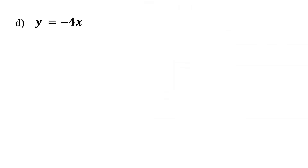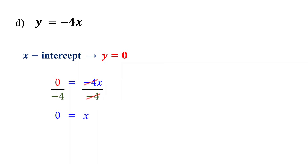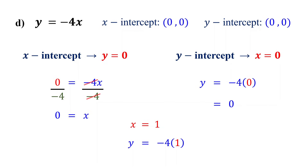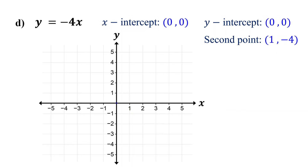The next example is a bit tricky, so stay with me. When you set y to 0 and solve for x, you find that the x-intercept is the point 0 comma 0. Similarly, when you set x to 0 and solve for y, you find that the y-intercept is also 0 comma 0. Notice that both intercepts are the same, so we only have one point. However, to graph a line, we need two points. So, let's find another point by choosing any value for x and solving for y. Let's choose x equals 1. Substitute 1 for x into the equation and solve for y. This equals negative 4. Therefore, our second point is 1 comma negative 4. Now, plot the intercept and the second point. Finally, draw a line through them.